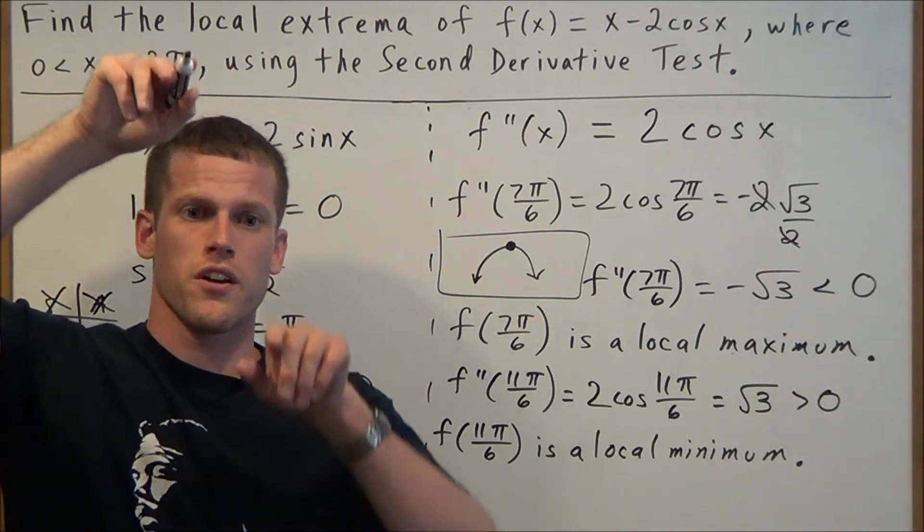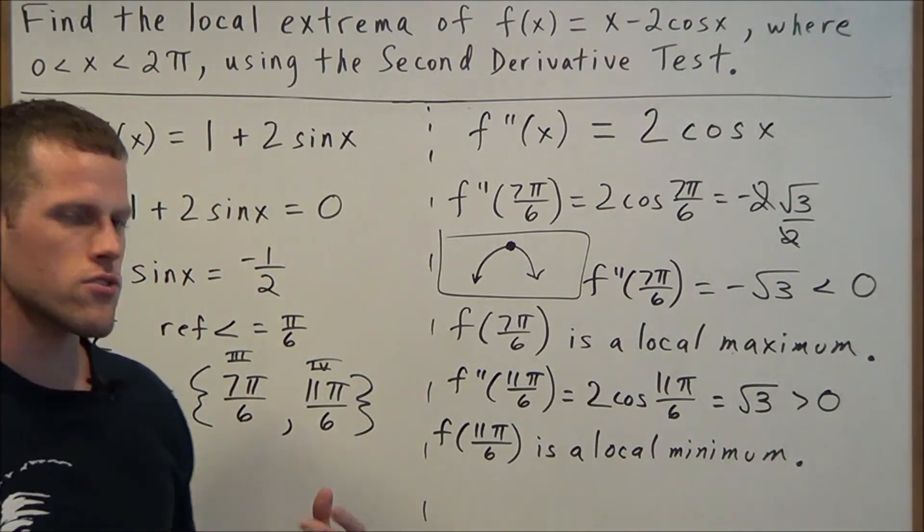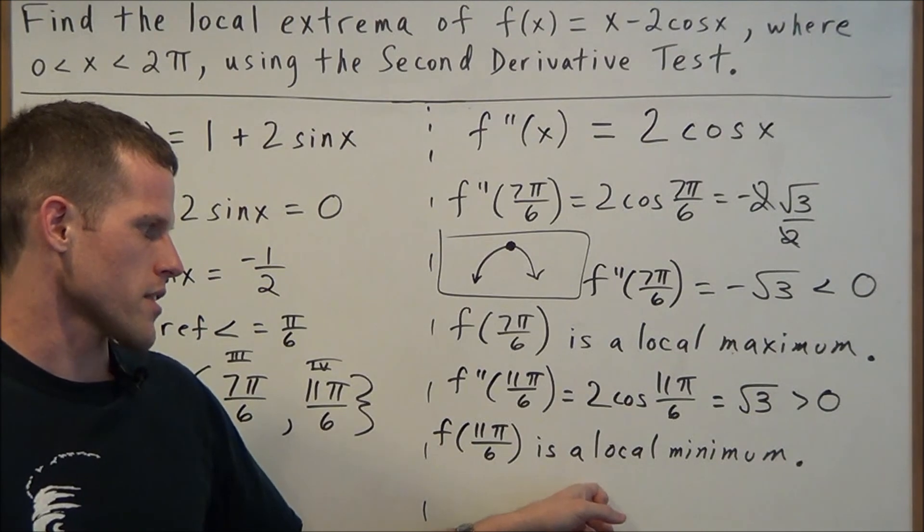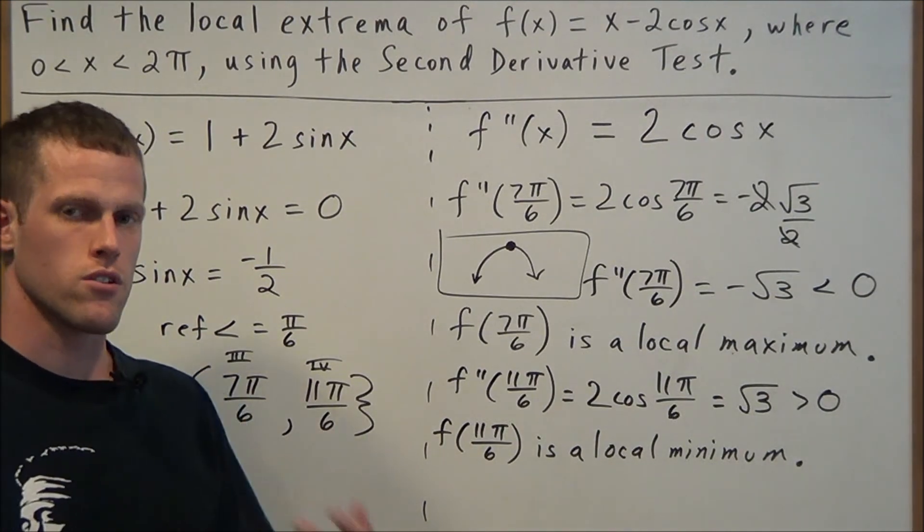And when you have a U shape, you're going to have a local minimum at the bottom. So it's the same mental check to verify that this is, in fact, the right conclusion we're taking here.